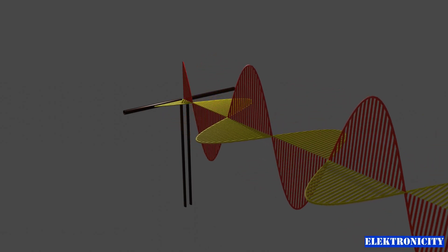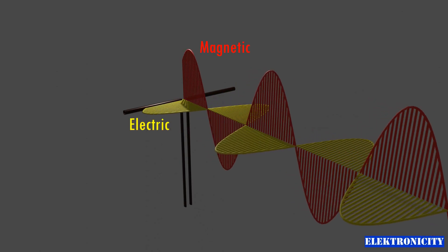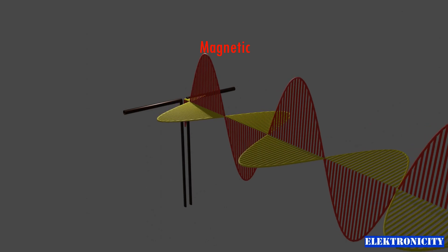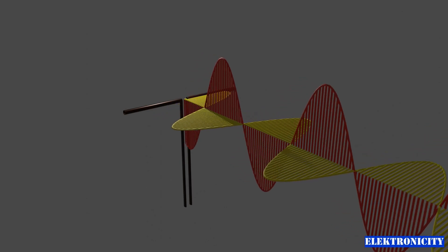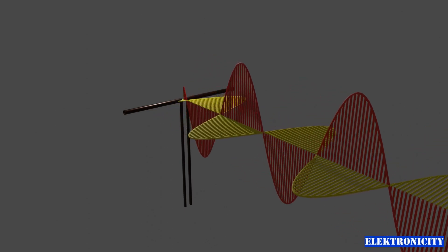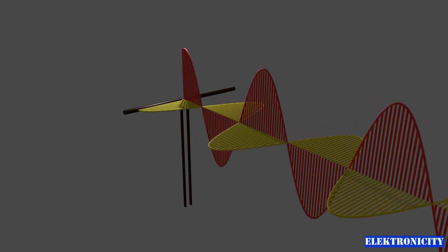Electromagnetic waves are oscillations of electric and magnetic fields that propagate through space. They are a fundamental mechanism by which information is transmitted in today's world.